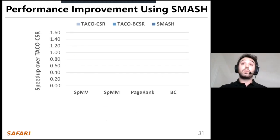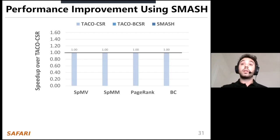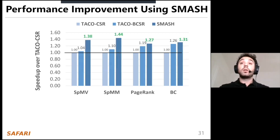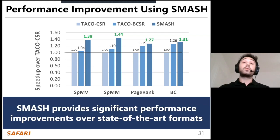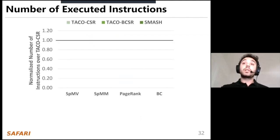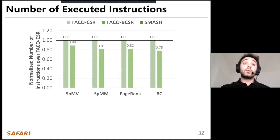In this figure, we demonstrate the speedup of SMASH and TACO-BCSR over TACO-CSR across four workloads: SPMV, SPMM, PageRank, and Betweenness centrality. BCSR is another state-of-the-art format. As we observe, SMASH provides significant performance improvement over the state-of-the-art format, up to 44%. The reason is that SMASH significantly reduces the number of executed instructions by removing data-dependent indexing instructions from the pipeline — the BMU is now responsible for that.